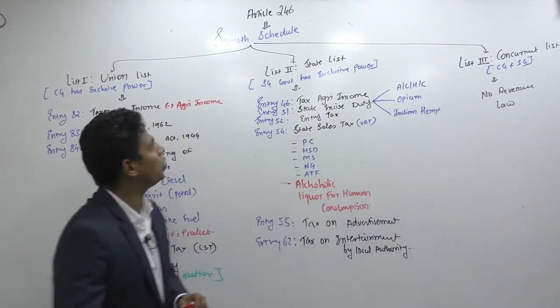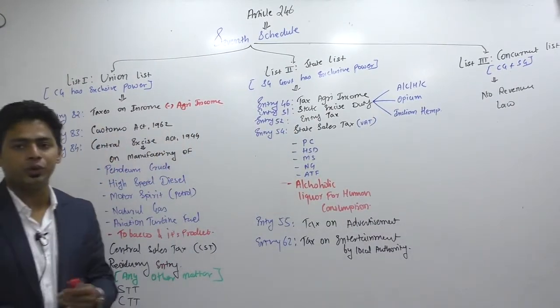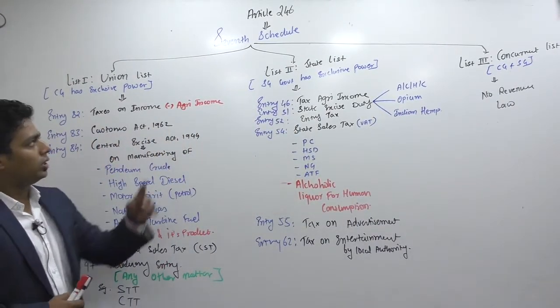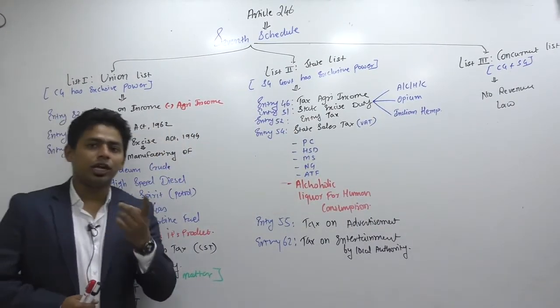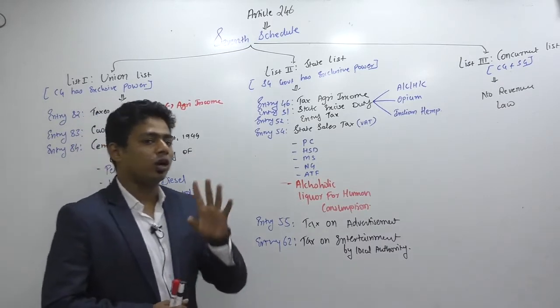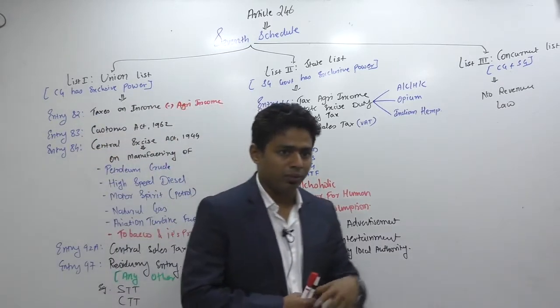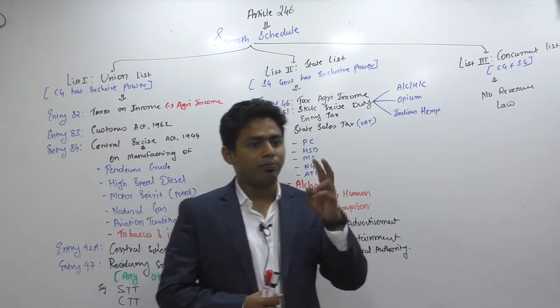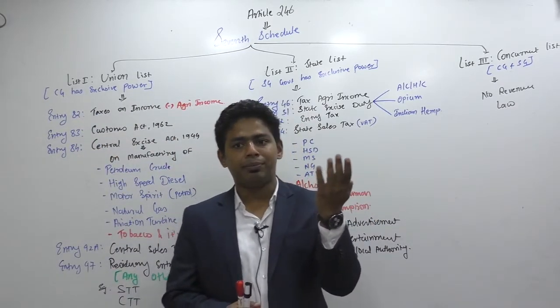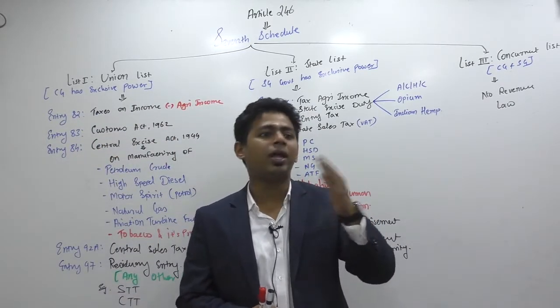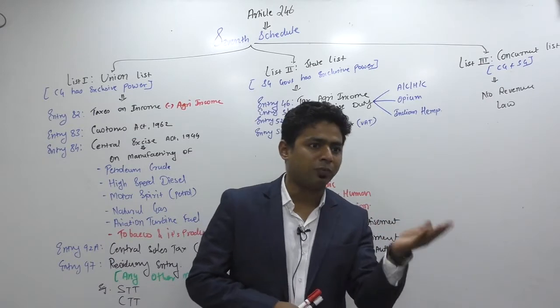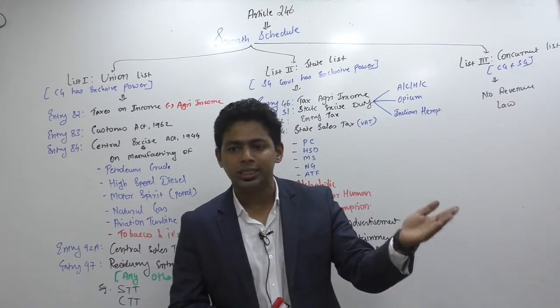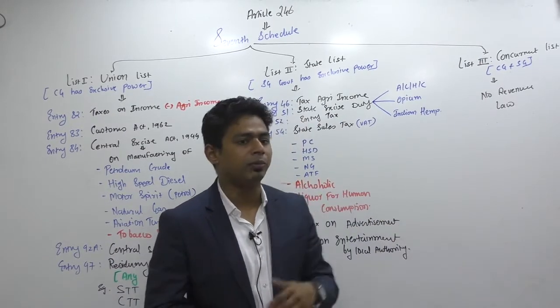Article 246, 7th Schedule. This article will tell you who is having what power, because power is divided between central government and state government — that is parliament and state legislative assembly.